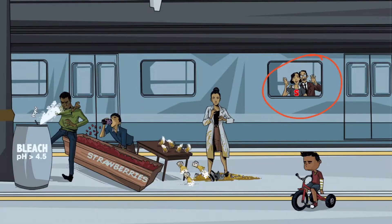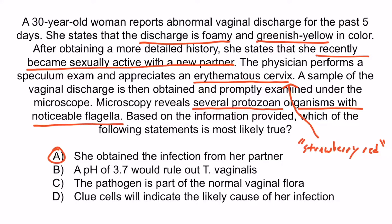Choice B is incorrect because a pH that doesn't fit exactly can't compete with the findings in the vignette — you can't rule out Trichomonas just because the pH doesn't fall neatly above 4.5. Choice C is incorrect because Trichomonas is not part of the vaginal flora; however, this would be true if we were talking about Gardnerella vaginalis. Choice D is incorrect because clue cells are found in Gardnerella infections, not Trichomonas infections, so clue cells would not tell us what's going on here.